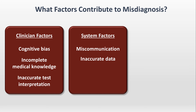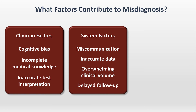Inaccurate data also includes something called chart lore, which is when a symptom, test result, or diagnosis is erroneously entered into the medical chart and is subsequently copy and pasted forward over multiple encounters before the error is caught. Another system factor is overwhelming clinical volume, in which clinicians simply are not given adequate time for accurate assessment and investigation. And last in this category is delayed follow-up. A primary care clinician might think the patient has a gastric ulcer and refer them for an EGD to confirm it, but if the EGD can't be scheduled in a timely fashion, the fact that the patient actually could have gastric cancer will go unrecognized.